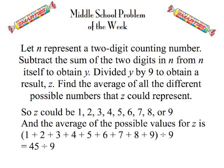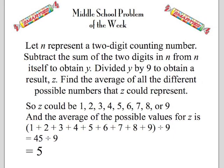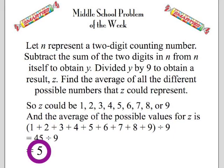We take the average by adding the digits and getting 45, dividing by 9 to get 5 — the answer to this week's Problem of the Week.